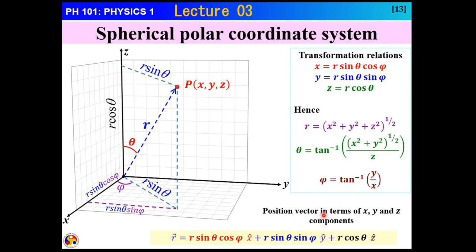The position vector can be written in terms of Cartesian unit vectors with spherical parameters: R sin theta cos phi x-cap plus R sin theta sin phi y-cap plus R cos theta z-cap. We write it this way because we want to define mathematically the unit vectors along the three perpendicular directions of the spherical coordinate system.